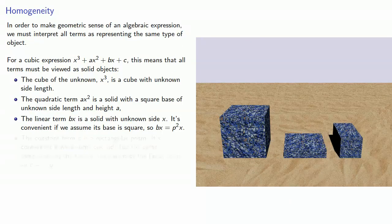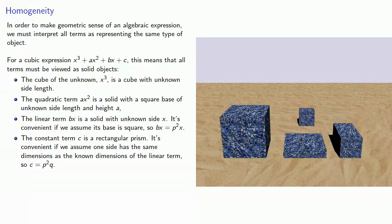And finally the constant term c is some rectangular prism, and it's convenient if we assume one side has the same dimensions as the known dimensions of the linear term. So c is p²q.